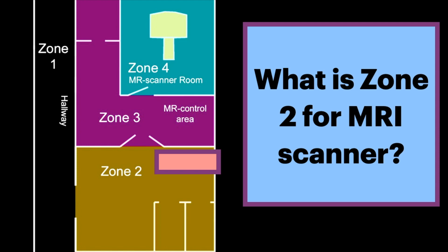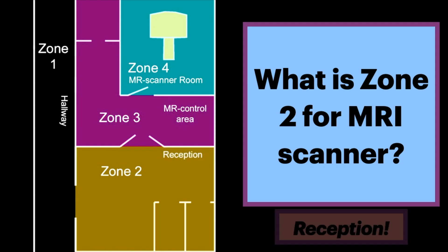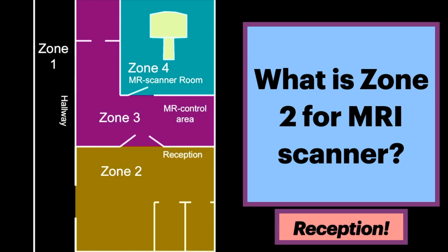In preparation for learning more about MRI physics, we're going to learn about the different MRI zones for the scanner. For our question: what is Zone 2 for the MRI scanner? The answer is the reception area. The ACR, or American College of Radiology, distinguishes 4 MRI zones, which we'll discuss in this video.